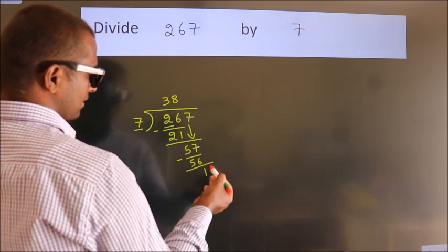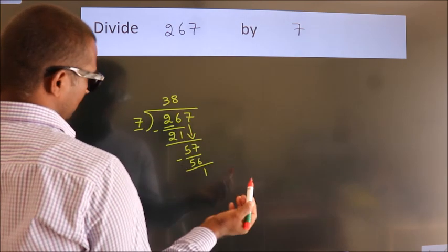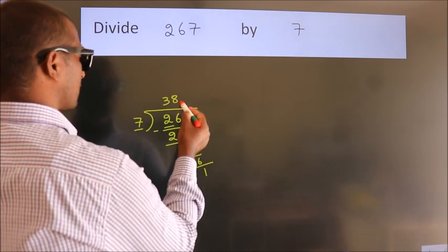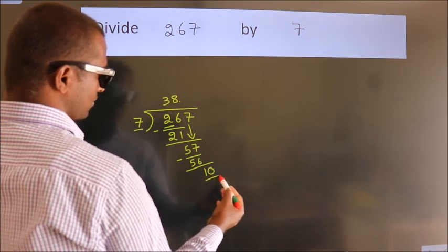After this, no more numbers to bring it down. So, what we do is, we put dot, take 0. So, 10.